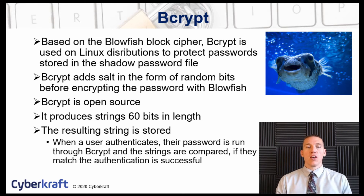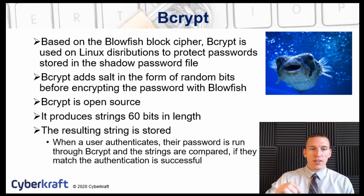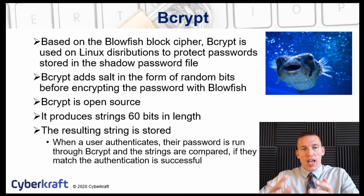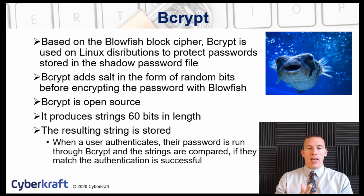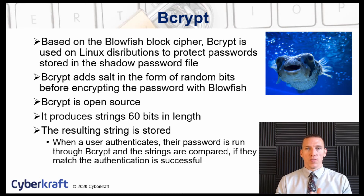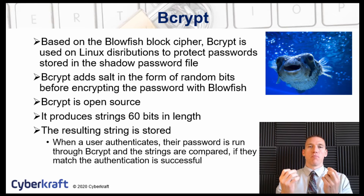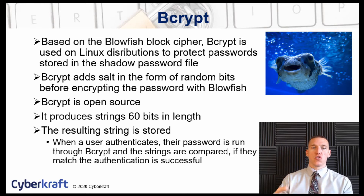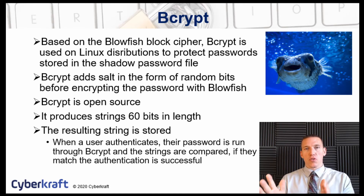bcrypt produces a string 60 bits in length, which is one of the bit sizes supported by Blowfish, and the resulting string is stored within the shadow file. bcrypt takes passwords located in Linux's shadow password file (/etc/shadow), adds salt in the form of random bits, encrypts those passwords with Blowfish, and then stores the resulting encrypted string. The hash it produces is 60 bits in length.